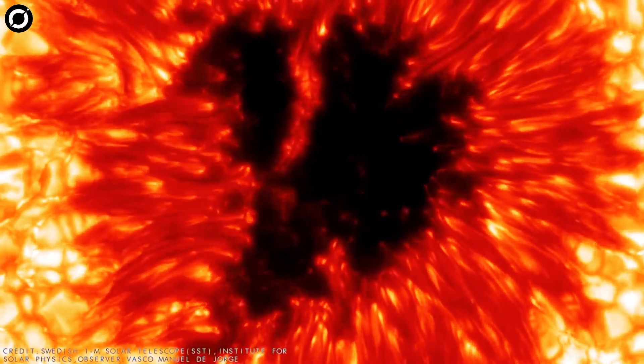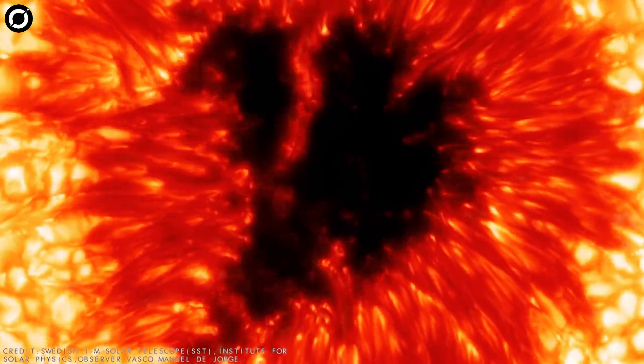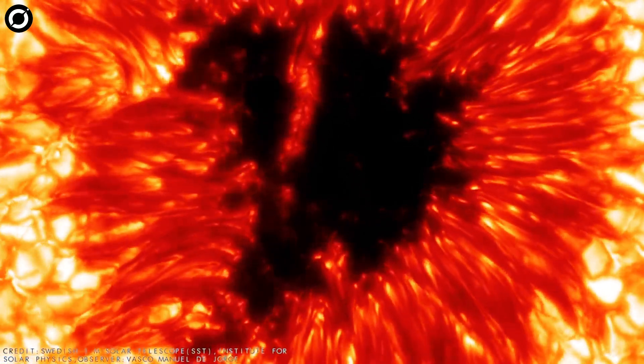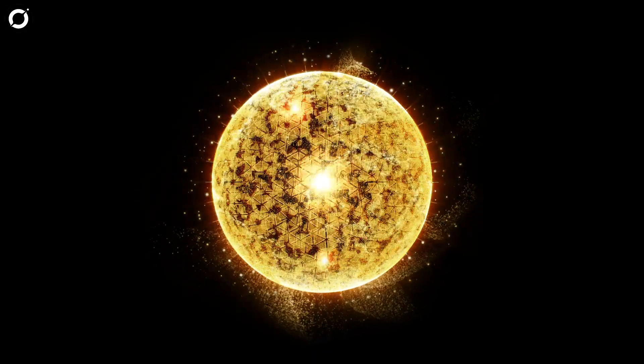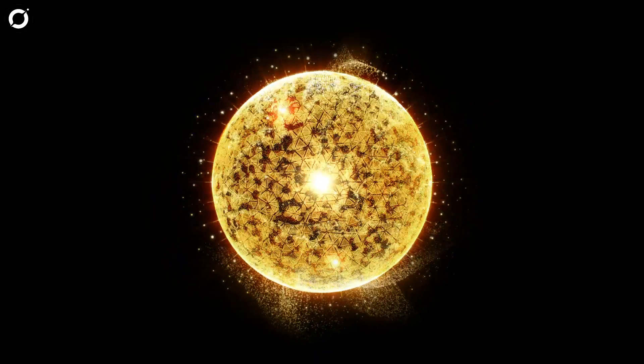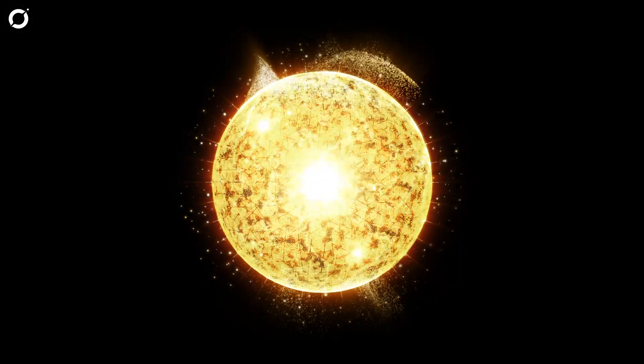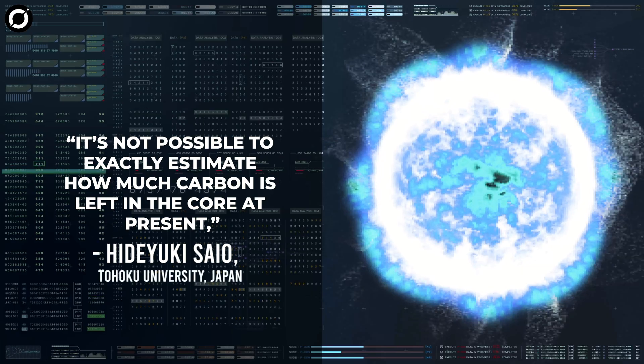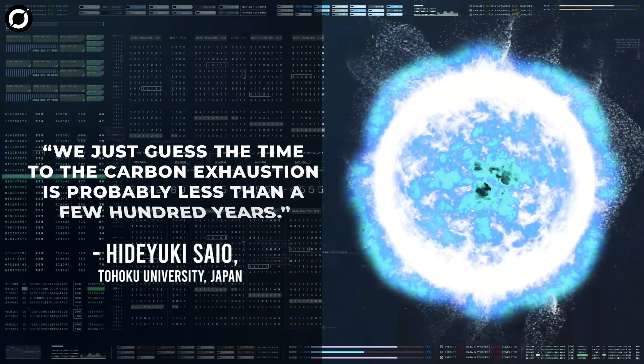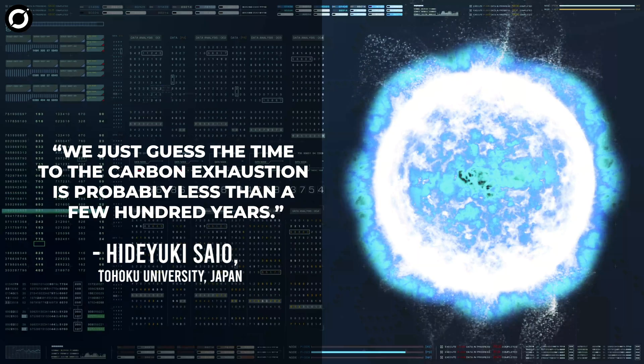After carbon is exhausted in the core, a core collapse leading to a supernova explosion is expected in a few tens years, the researchers write. But when will the carbon run out? It's hard to tell because the pulsation periods don't change much at this late stage. It's not possible to exactly estimate how much carbon is left in the core at present, Sayo says. We just guess the time to the carbon exhaustion is probably less than a few hundred years.